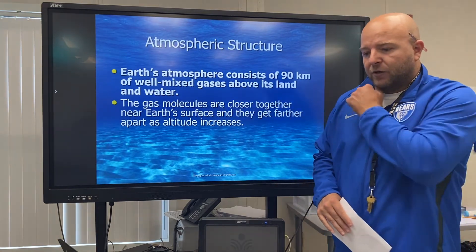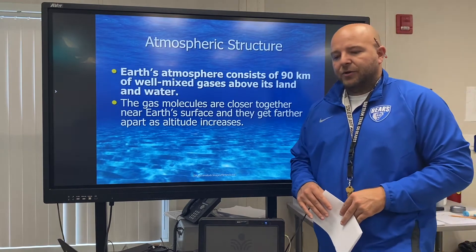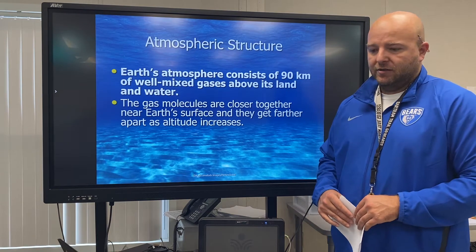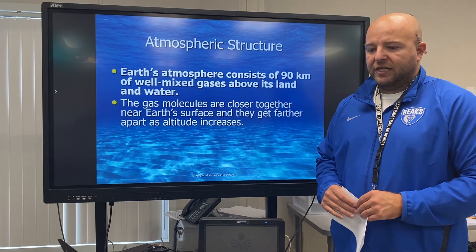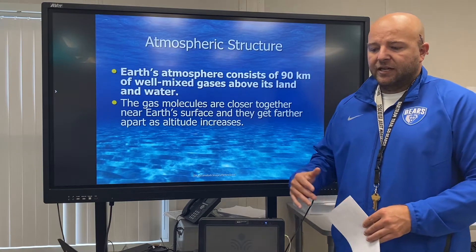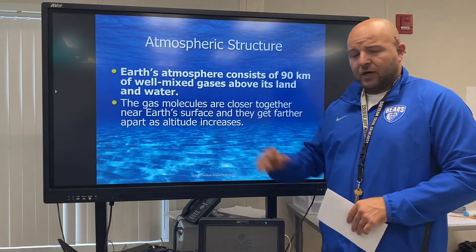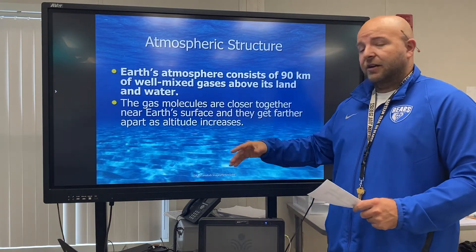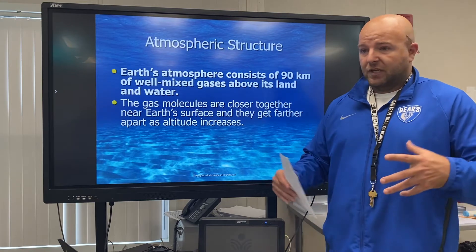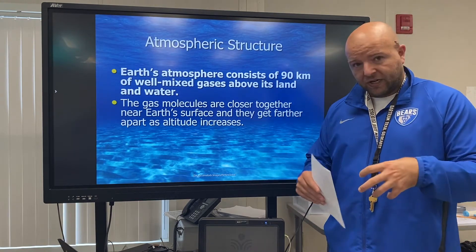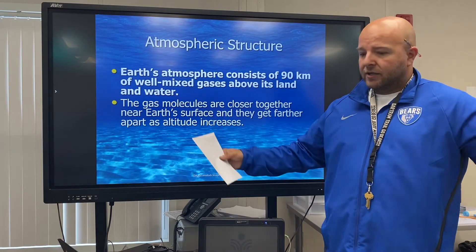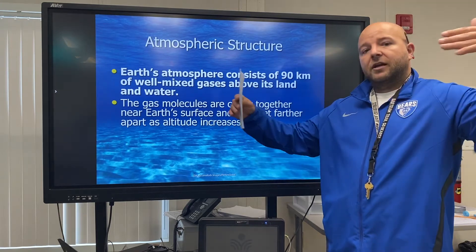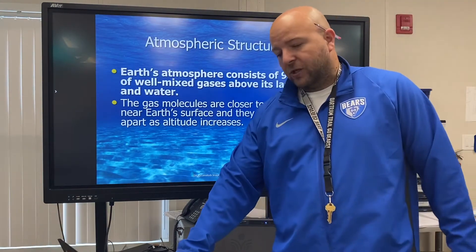We're writing the bold part here. Earth's atmosphere consists of 90 kilometers of well-mixed gases above its land and water. The gas molecules are closer together near Earth's surface and get farther apart as altitude increases. This is a continuation of the idea of density stratification — in the same way that Earth's layers are more dense at the center and get less dense as you go out, the atmosphere works the same way. It's thicker and more dense towards the ground and gets less dense as you work your way towards outer space.